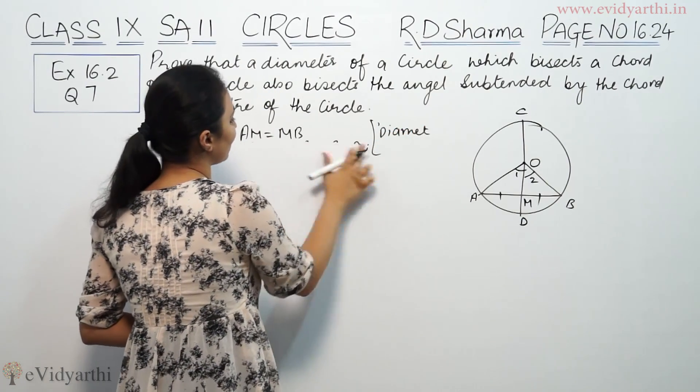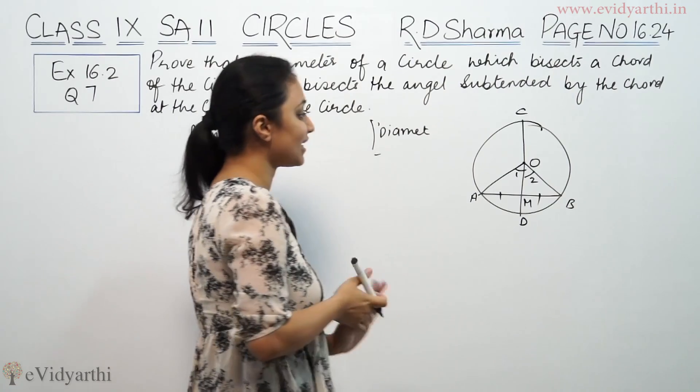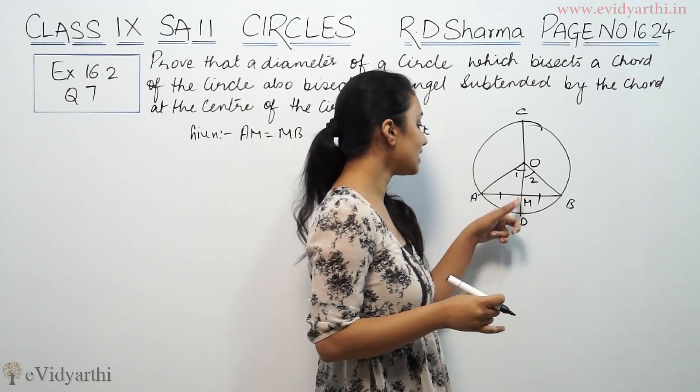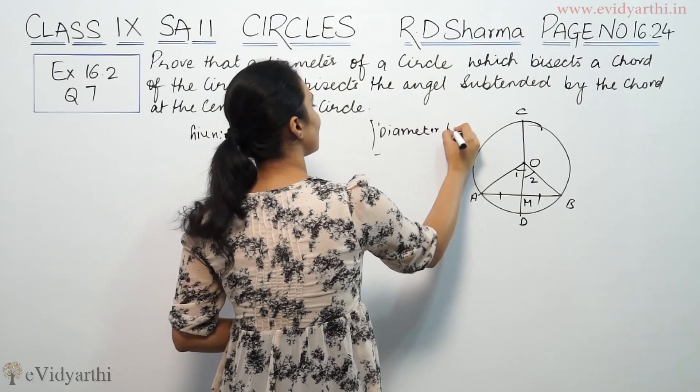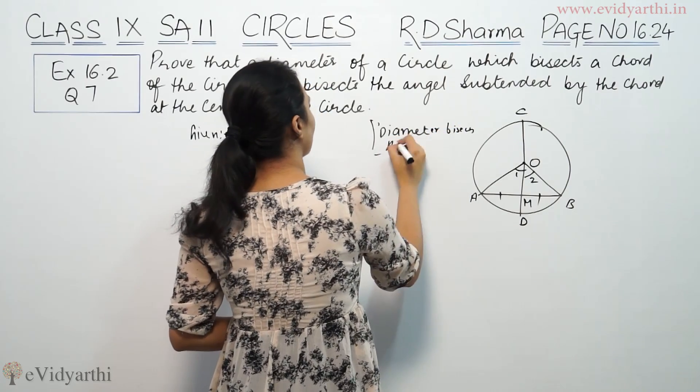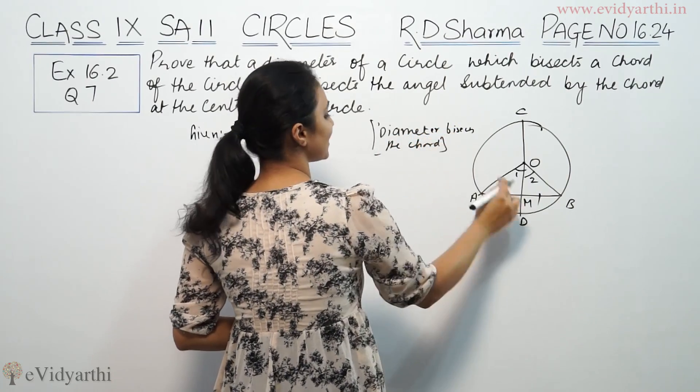I'm sorry, angle 90 degrees we have not given. It just says bisects, not perpendicular bisects. So the diameter just bisects the chord. So we have not used 90 degrees; we can just say that both are equal.